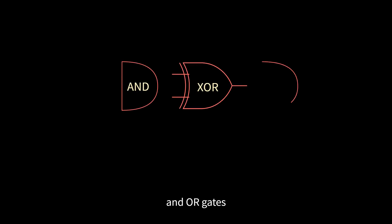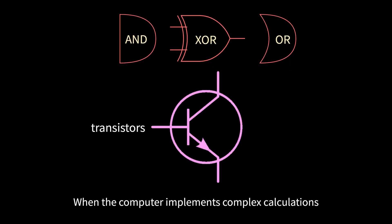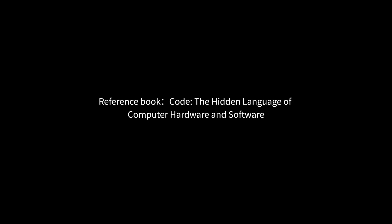Well, we actually only use logic gates, such as AND gates, XOR gates, and OR gates, and they can be composed of transistors. When the computer implements complex calculations, it is actually only opening and closing the circuit. This video is here, and we will see you in the next issue.